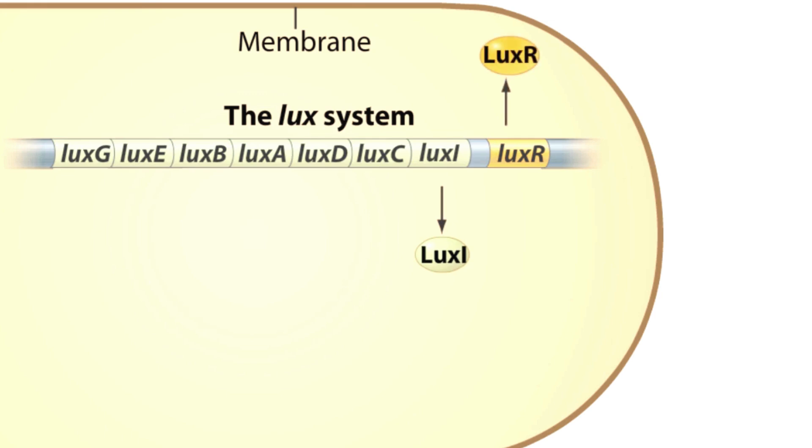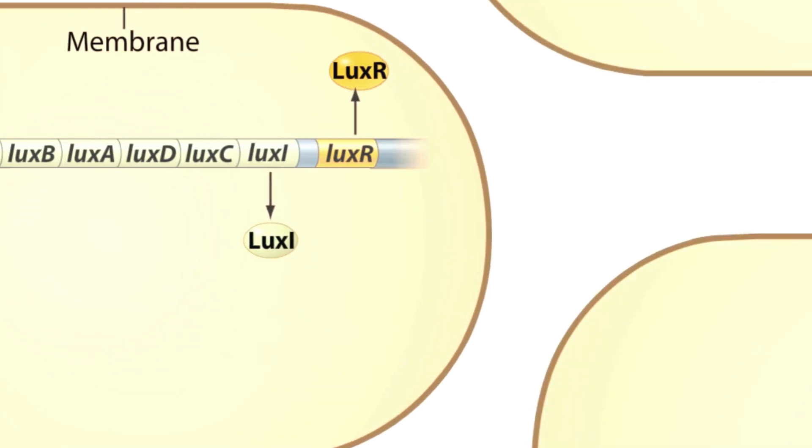LuxI synthesizes the autoinducer, which in the case of Vibrio fischeri is a chemical called acyl homoserine lactone. The autoinducer quickly diffuses out of the cell, typically without the chance to interact further with the lux system inside the cell.